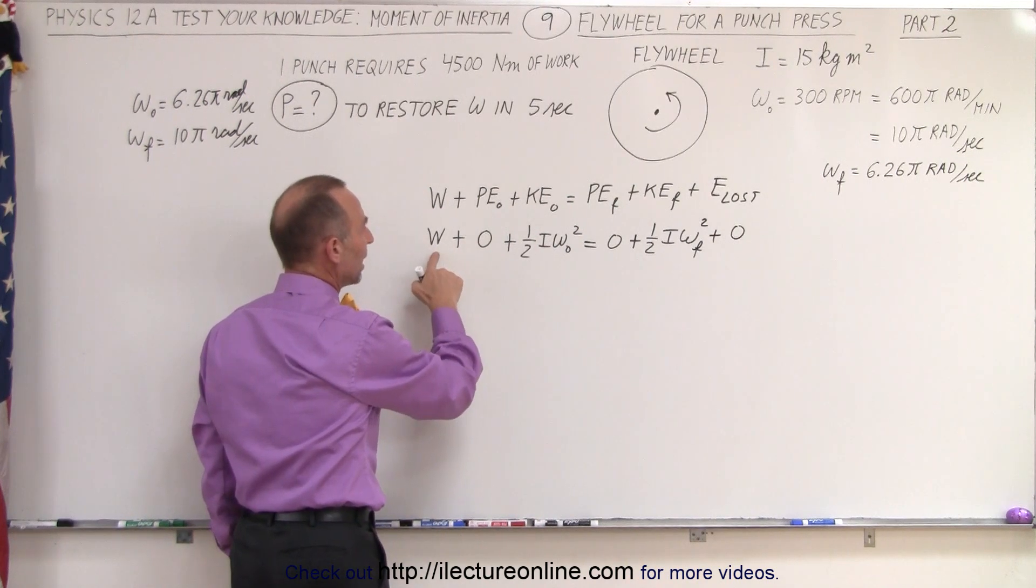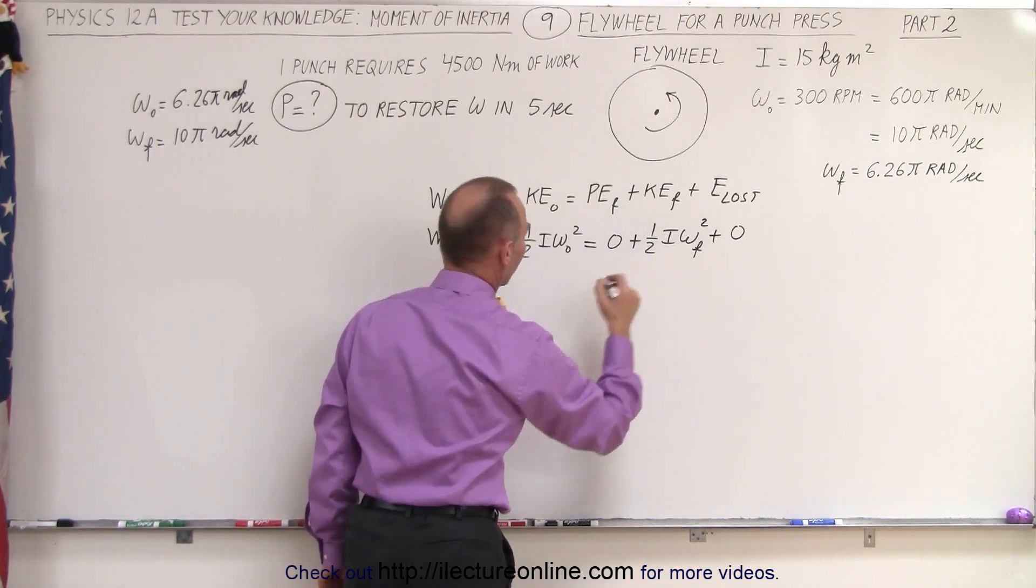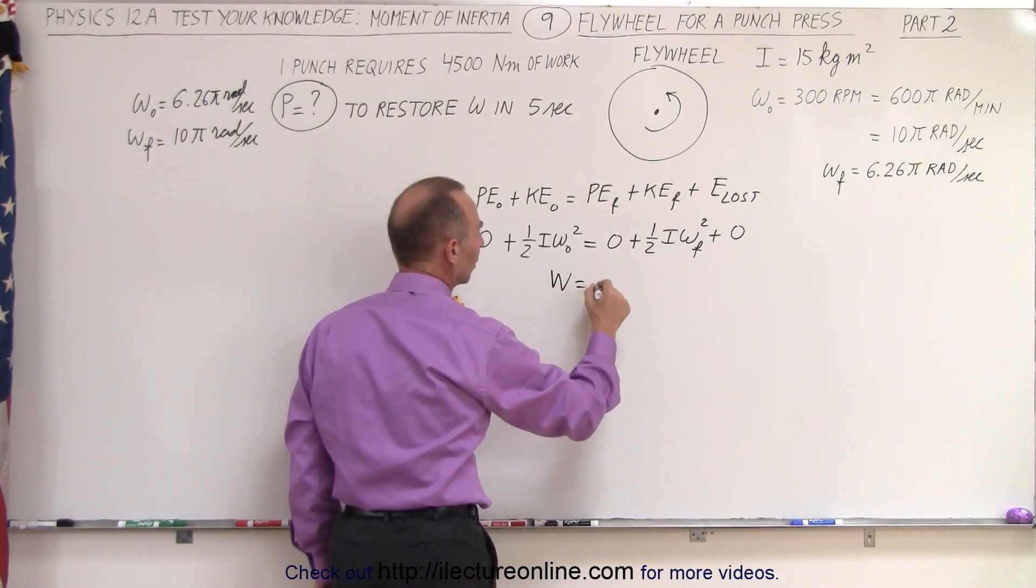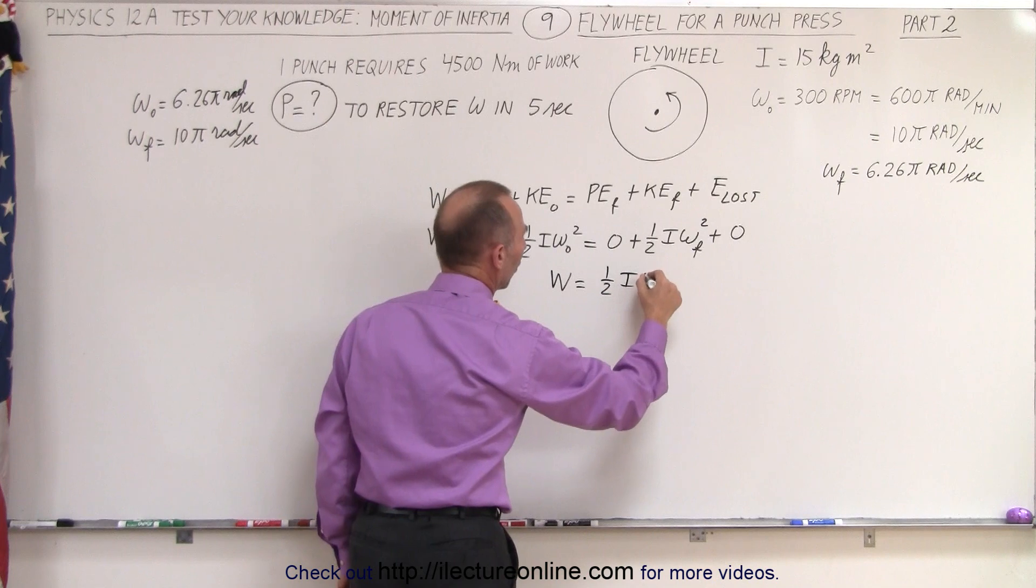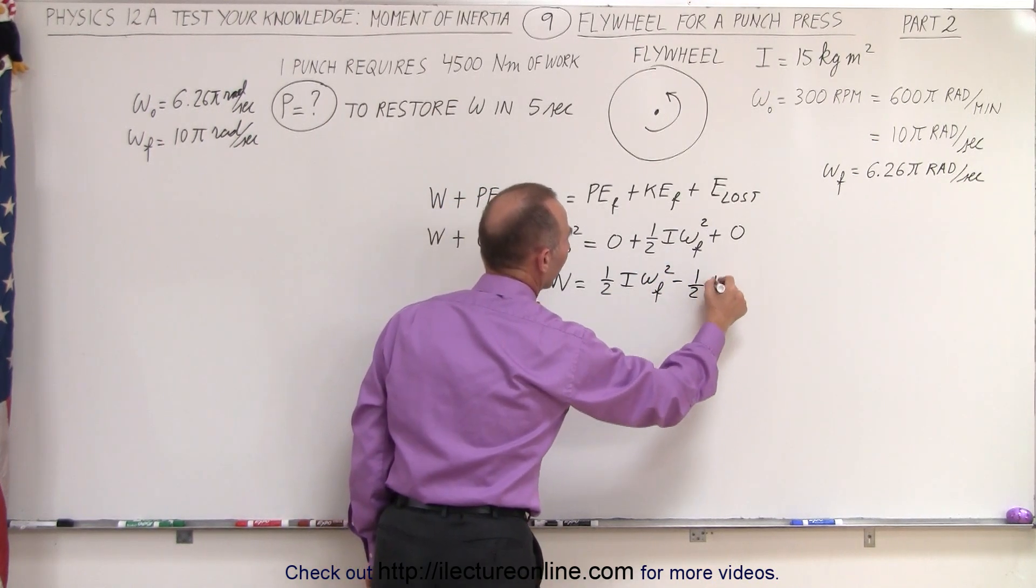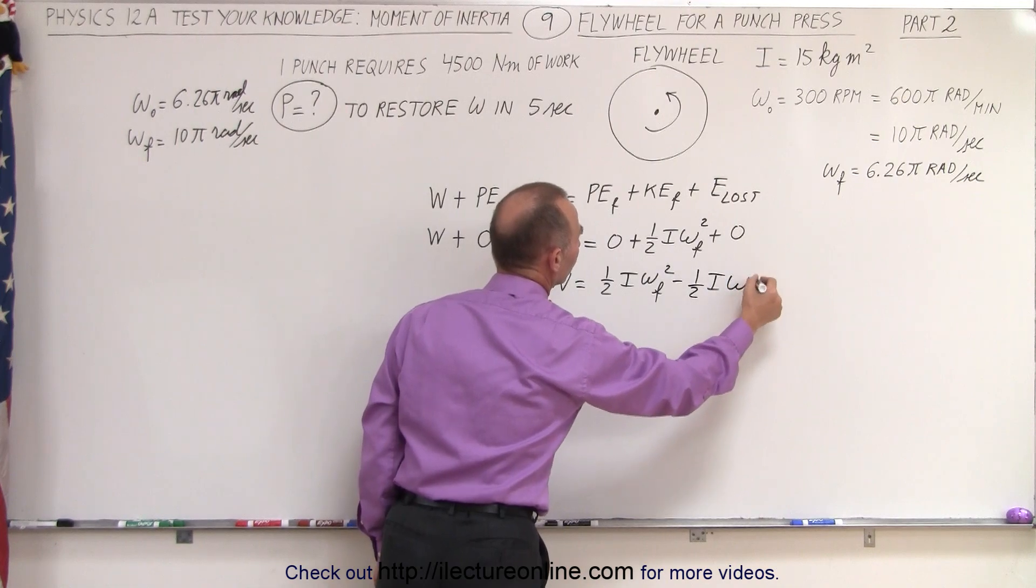To get the work done, I'm going to bring this over to the other side. So the work done is equal to one half i omega final squared minus one half i omega initial squared.